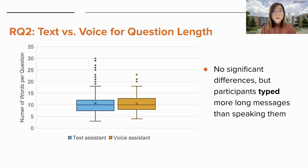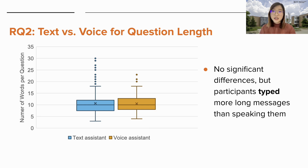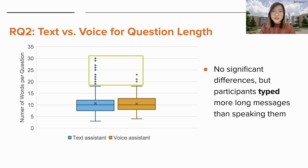This box plot shows the distribution of the number of words per question for text and voice assistants. We didn't find any significant differences, but we did see more outliers — the dots that lie above the whisker — in the text condition. This means that participants typed more long messages instead of speaking them.